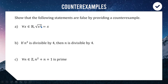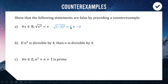A square root and a square do often counteract each other, except when you look at negative numbers. For example, √((-2)²) = √4 = 2. We squared -2 and then square-rooted it but did not get back to where we started. Any negative number is a counterexample, so the statement is not true for all real numbers.